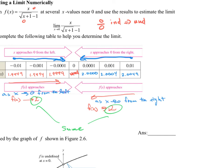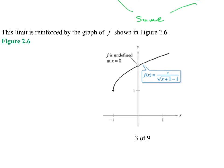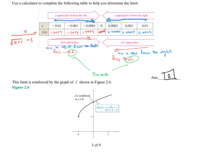That might seem a little weird because the function is not defined at that point — if you plug in zero, it's undefined. But the y value that truly matters here is the value it's approaching near that point, which is two. I went ahead and put the graph on here as well — this is the graph of x over the square root of x plus one minus one. At the point where x equals zero, the y value approaches two; it's undefined there, but it approaches two. We were able to get that using the table without the graph, but the graph is a nice visual reminder of the answer.